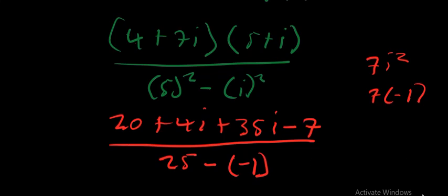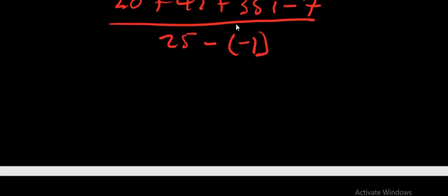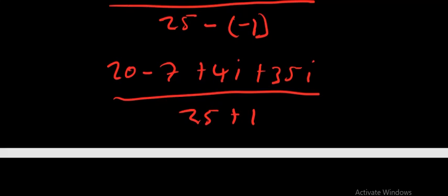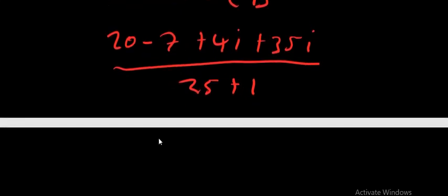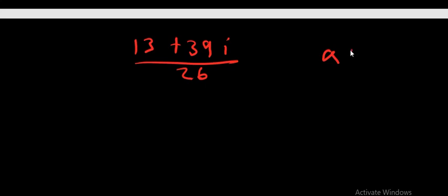So the numerator becomes 20 − 7 + 4i + 35i over 25 + 1. That simplifies to 13 + 39i over 26. We have been asked to express this in the form a + bi, so we write 13/26 + 39/26 · i.